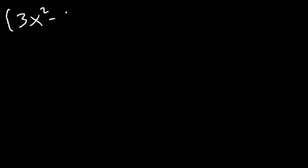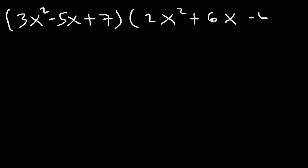Now what's going to happen if we multiply a trinomial by another trinomial? Go ahead and try it. 3 times 3 is 9, so before we combine like terms we should have 9 terms.